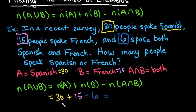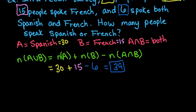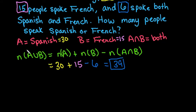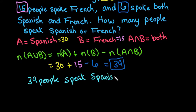And then we would simply do the math. 30 plus 15 would give us 45. 45 minus 6 would give us 39. So we can say that based on this survey that we did, 39 people speak Spanish or French.